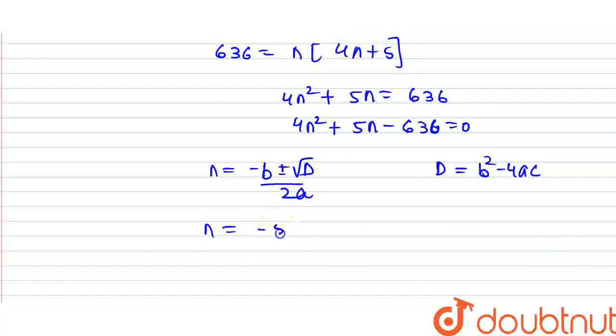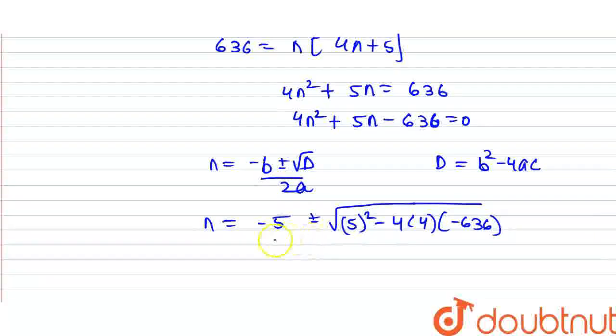So, n equals minus b, minus 5, plus minus root D. Now D is b squared minus 4ac. b is 5, minus 4 into a is 4 and c is minus 636. Divide by 2a, a is 4.